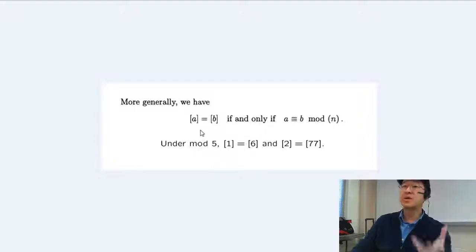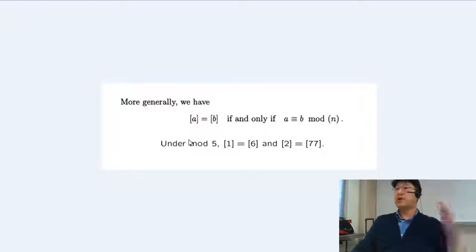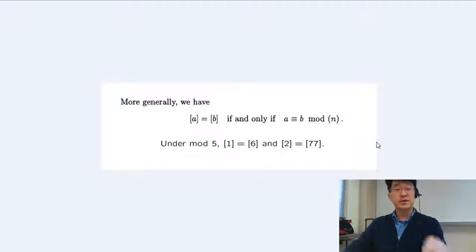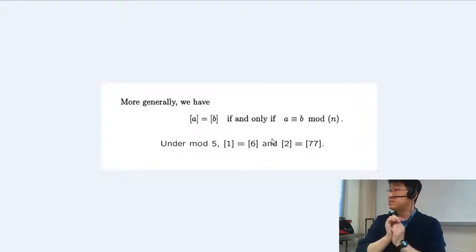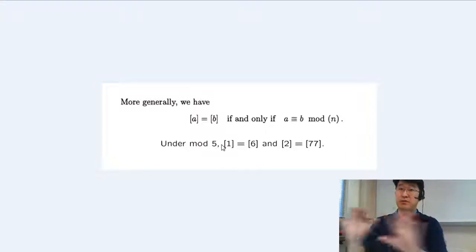A bracket is merely just a subset of integers. Another bracket is merely just another subset of integers. If you pull one marble out of one bag and one from another, shuffle them — how do you know these two marbles came from the same bag? Simply subtract those two marbles and see if the difference is divisible by N. That's how you know they came from the same bag. For mod 5, there are five bags. If one bag had 1 in it and you pull out a 6, you know it came from the same bag because 1 minus 6 is divisible by 5.